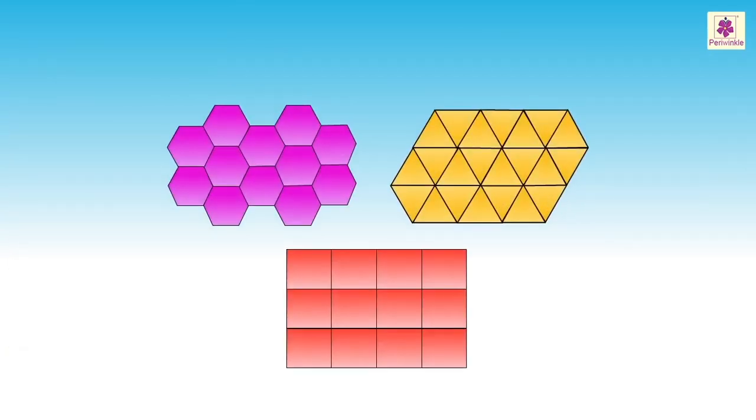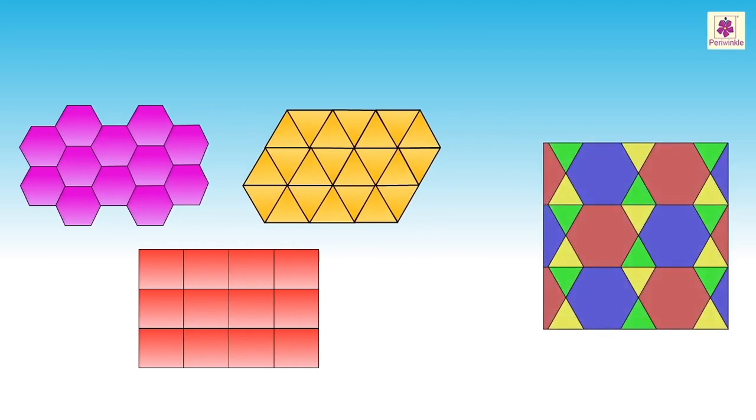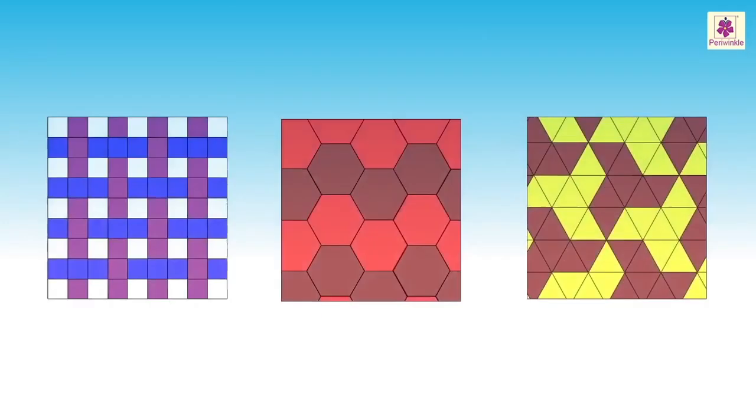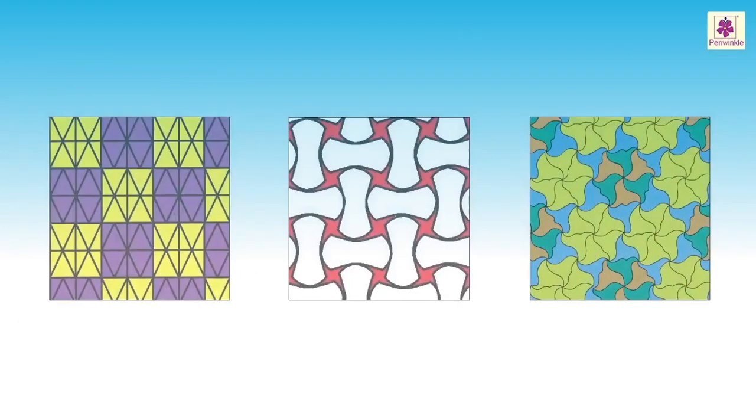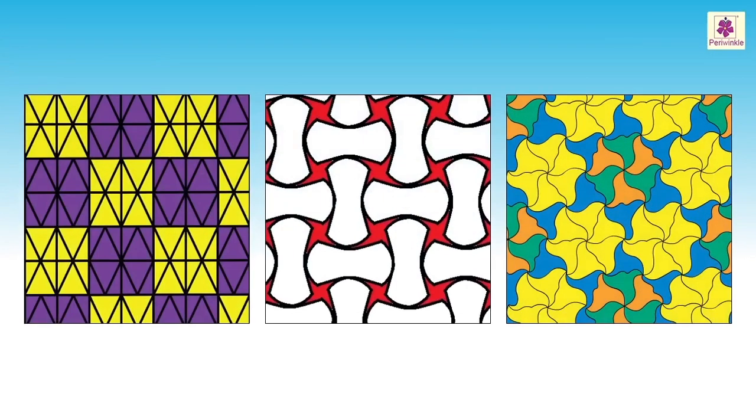The tessellation can either be made with a single 2D shape or a combination of more than one 2D shapes. All the shapes are arranged in a special manner to get the patterns. Look at these arrangements of tiles.